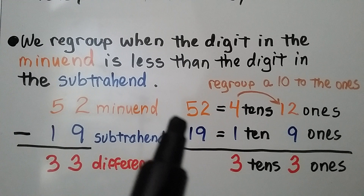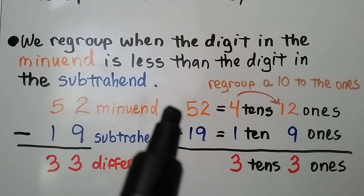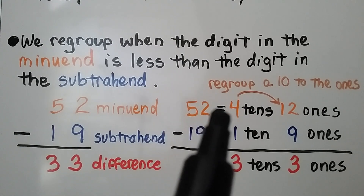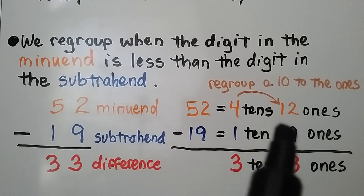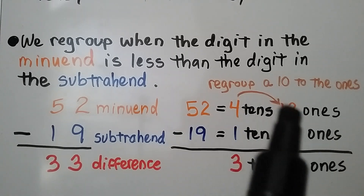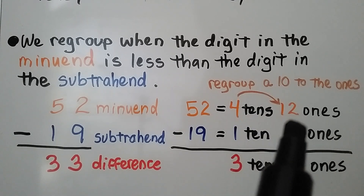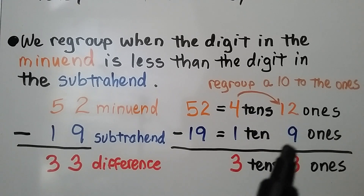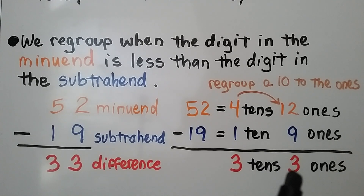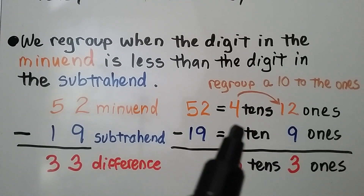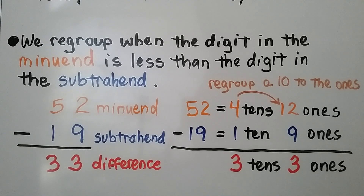52 is 5 tens and 2 ones. We regroup it as 4 tens and 12 ones — we gave a 10 to the ones place. Now we have 12 take away 9, that's 3. And we have 4 tens take away 1 ten, that's 3 tens. So our difference is 33.